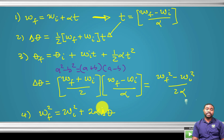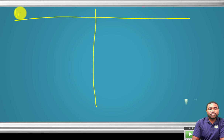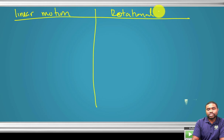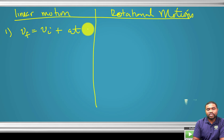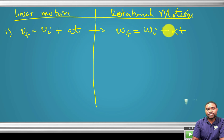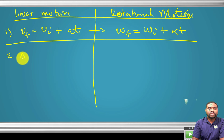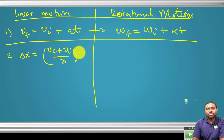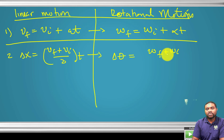To compare linear and rotational motion equations: (1) vf = vi + at corresponds to ωf = ωi + αt; (2) Δx = (vf + vi)/2 · t corresponds to Δθ = (ωf + ωi)/2 · t; (3) xf = xi + vi·t + ½at² corresponds to θf = θi + ωi·t + ½αt²; (4) vf² = vi² + 2aΔx corresponds to ωf² = ωi² + 2αΔθ.